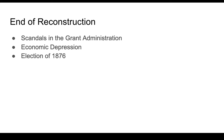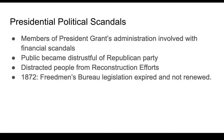Talking about the end of Reconstruction, there are really four main things: the scandals in the Grant administration, economic depression, judicial setbacks by the Supreme Court making certain rulings, and the election of 1876. We're going to go through each of these briefly to understand what happens when Reconstruction ends.